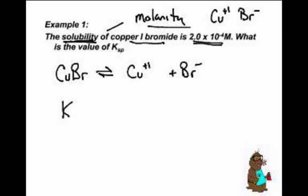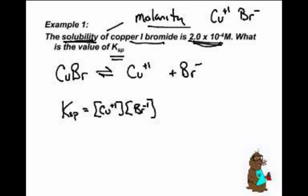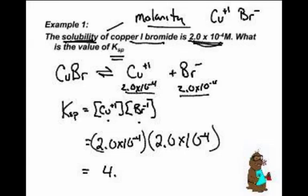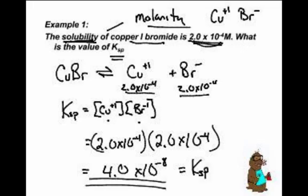The Ksp equals [Cu⁺] times [Br⁻]. The solubility — how much breaks apart — is 2.0 × 10⁻⁴. That means there will be 2.0 × 10⁻⁴ for the copper and 2.0 × 10⁻⁴ for the bromide. So Ksp equals 2.0 × 10⁻⁴ times 2.0 × 10⁻⁴, which gives us 4 × 10⁻⁸. That is equal to the value of the Ksp.